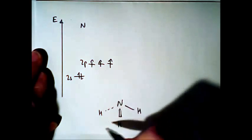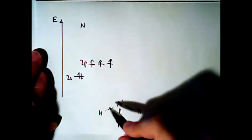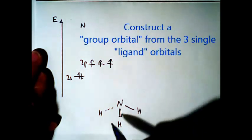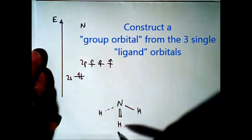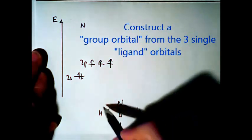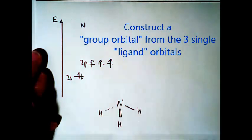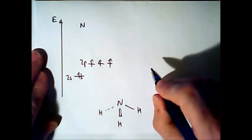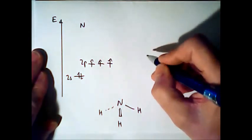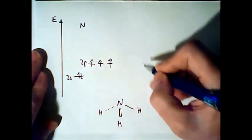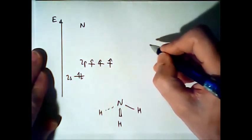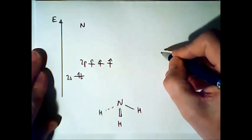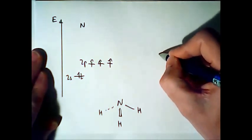First we have to make a so-called group orbital of these three hydrogens. We look at the electrons of these three hydrogens as if they were in the so-called H3 molecule. How to do this? Hydrogen has a lower electronegativity than nitrogen. That means in the energy it is higher than nitrogen. So this group orbital looks like this.